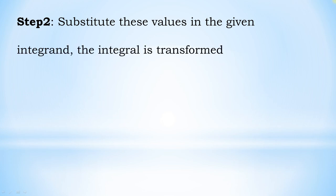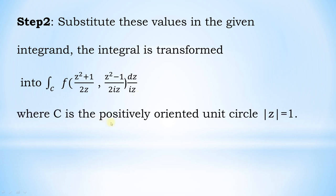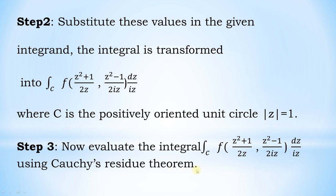Step 2: Substitute these values into the given integral. The integral is transformed into: ∫_C f((z²+1)/(2z), (z²−1)/(2iz)) · dz/(iz), where C is the positively oriented unit circle |z| = 1. Step 3: Evaluate this integral using Cauchy's residue theorem.